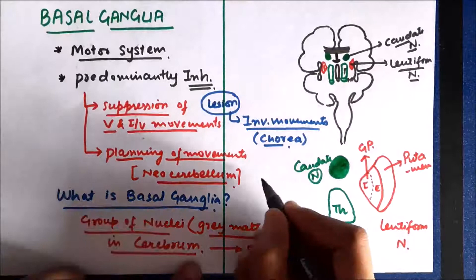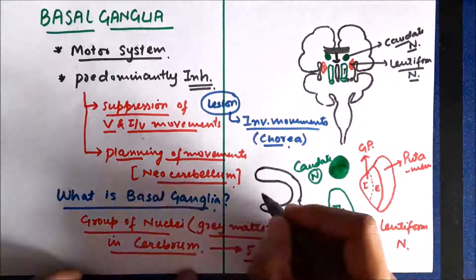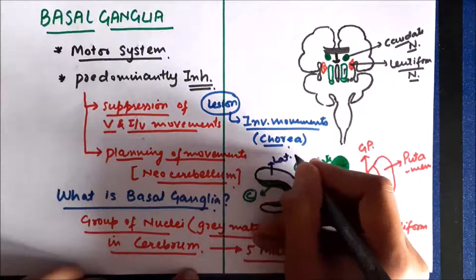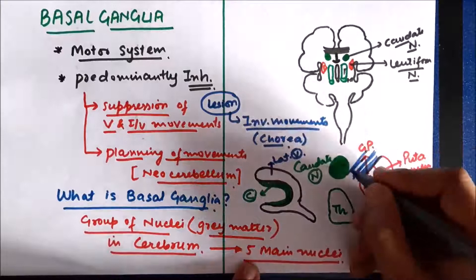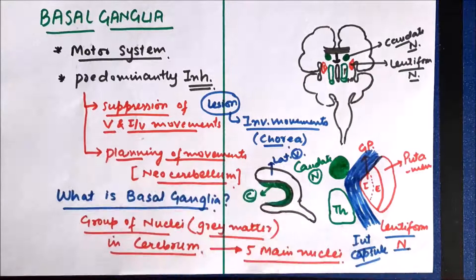In the sagittal section, the caudate nucleus is a C-shaped nucleus present in relation to the lateral ventricle of the brain. On each side of the brain, in between the caudate nucleus, thalamus, and lentiform nucleus, there are certain fibers which go from the cortex down to the lower parts of the brain. Together they constitute the internal capsule of the brain, present on each side.